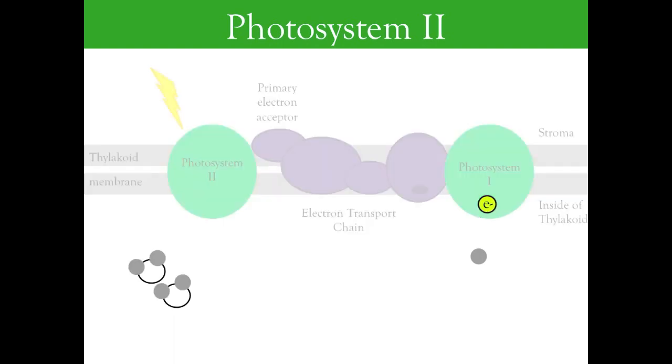The replacement electron comes from the process of splitting water molecules. As a byproduct of this water-splitting reaction, oxygen is produced and hydrogen ions are left on the inside of the thylakoid.